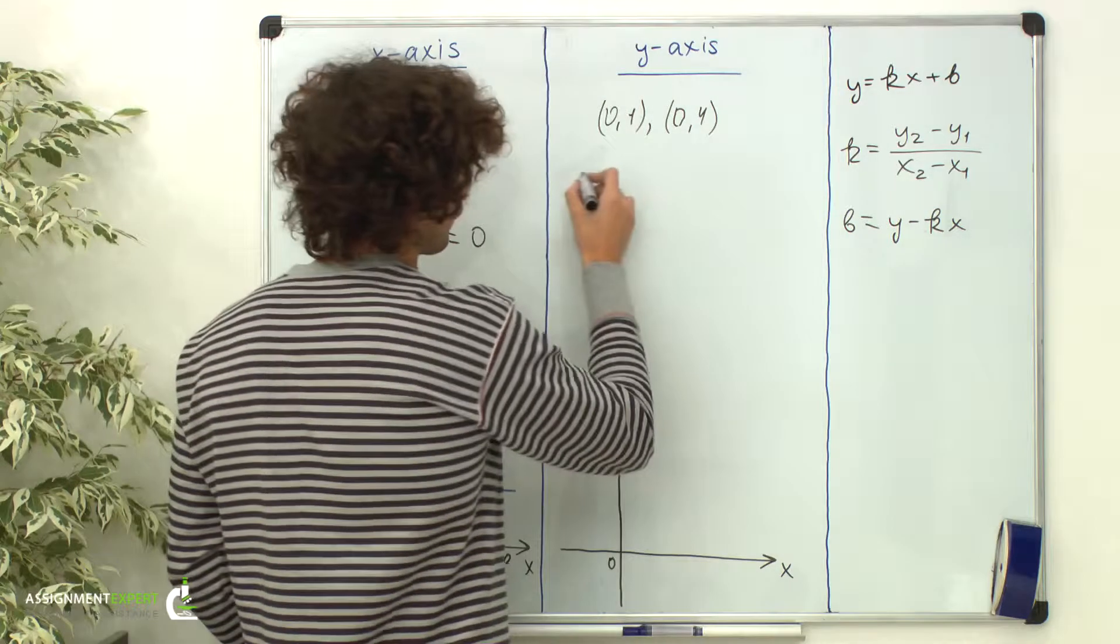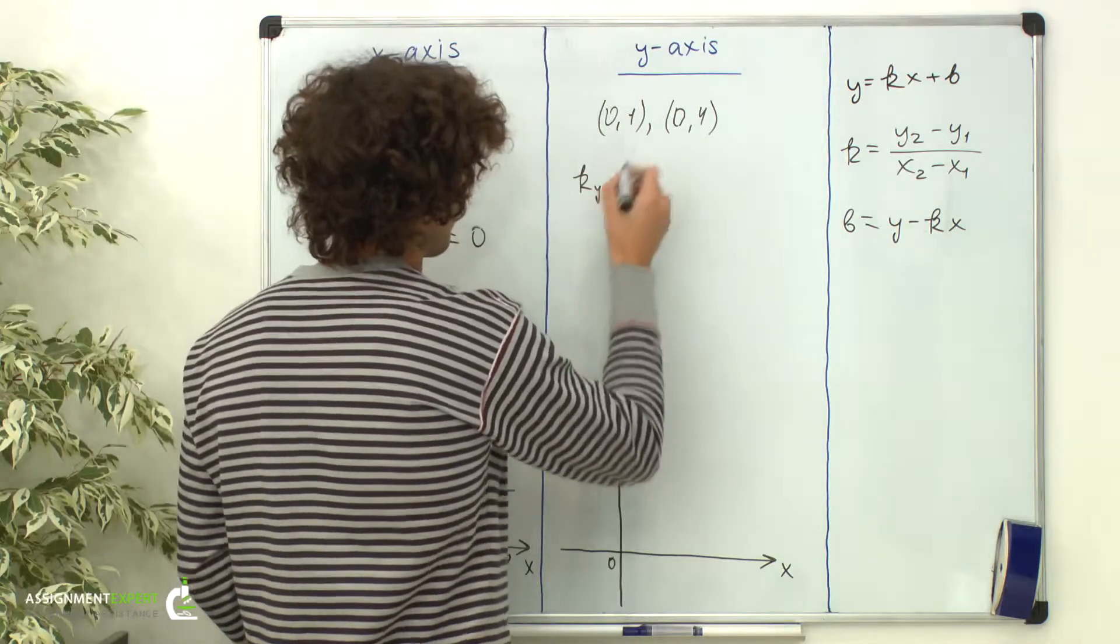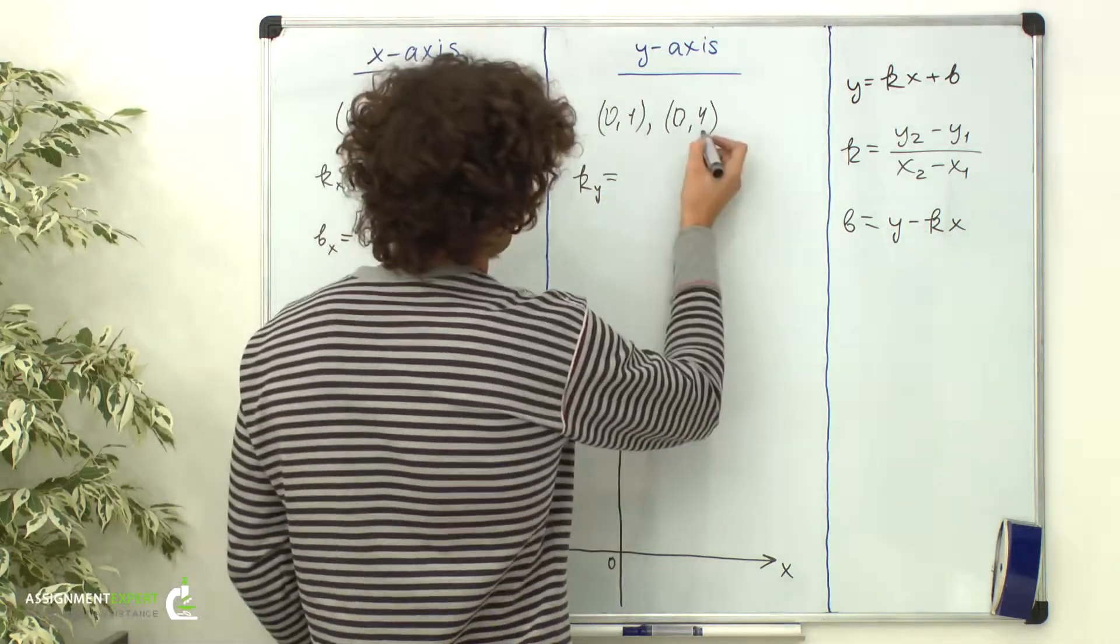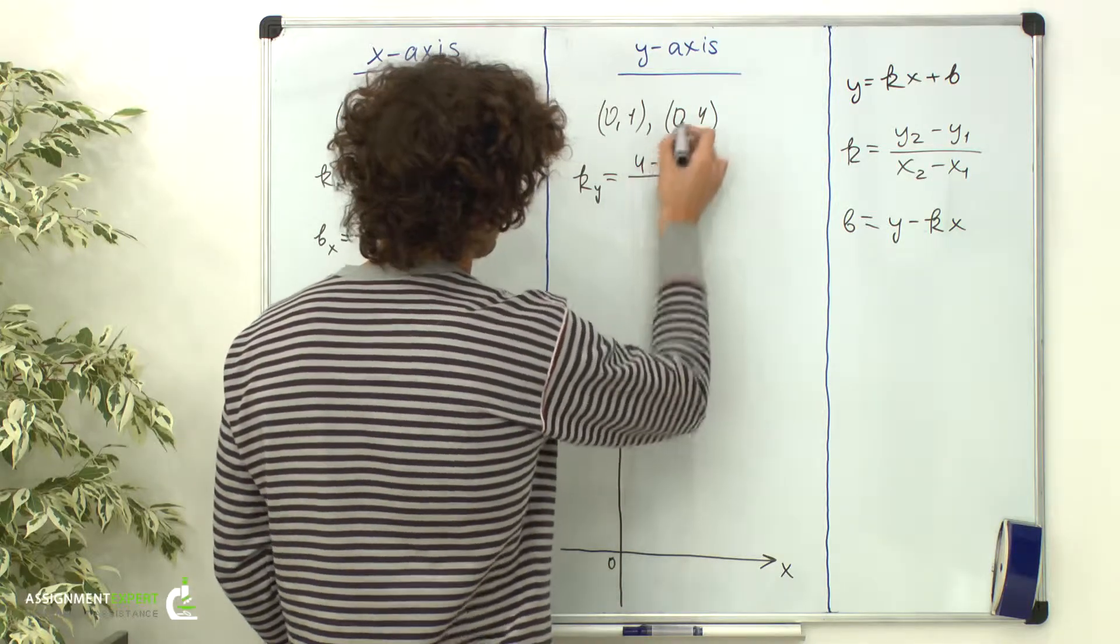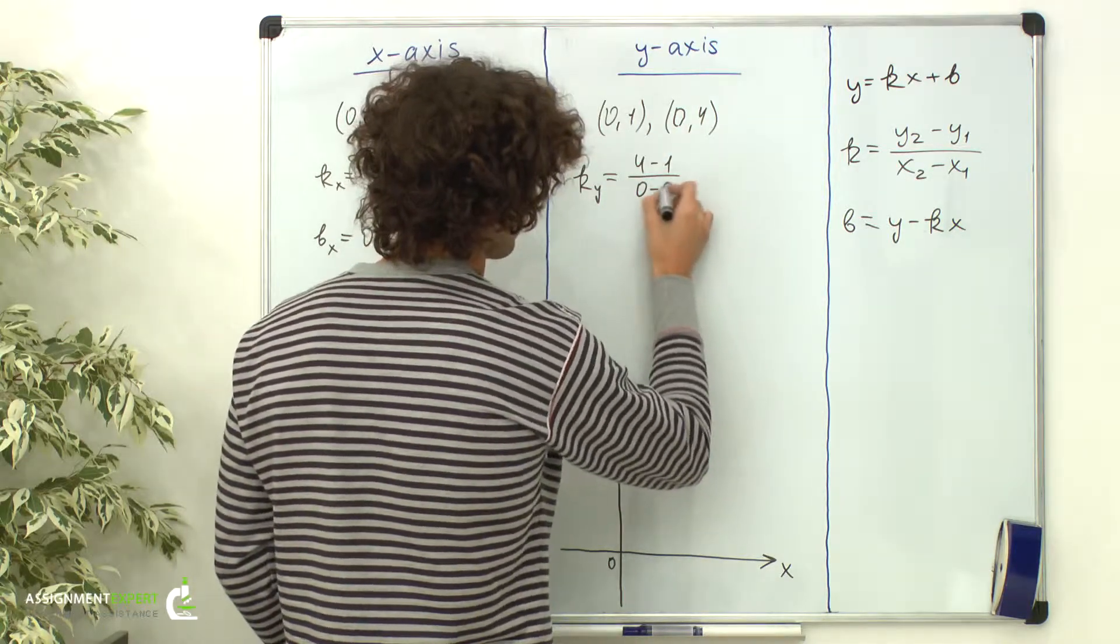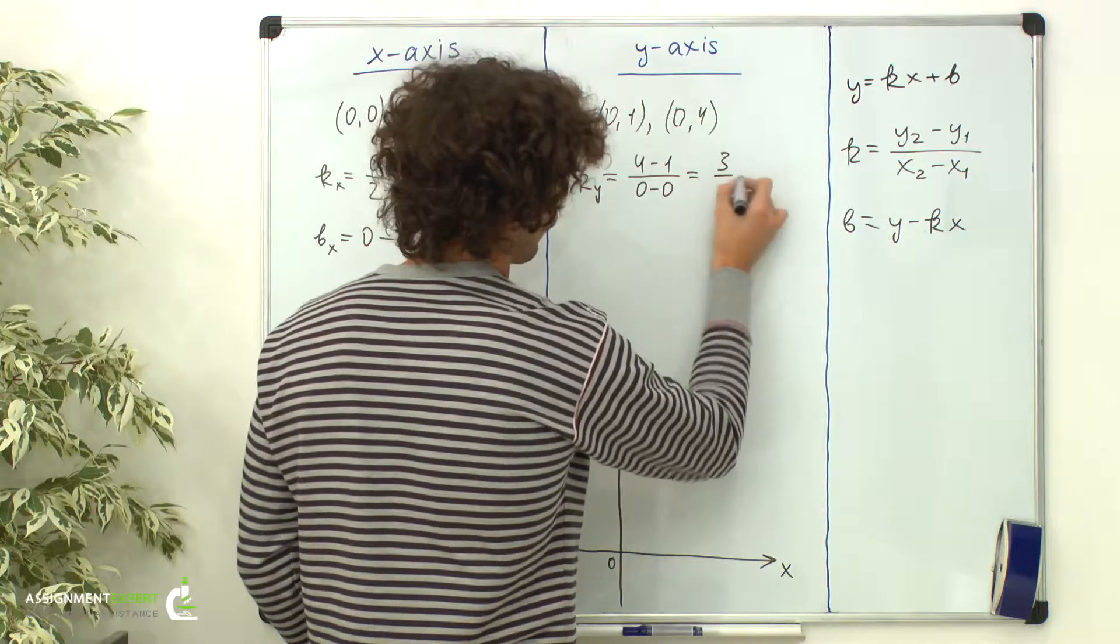We use the same formulas. k of the y-axis equals 4 minus 1 over 0 minus 0, which gives us 3 over 0.